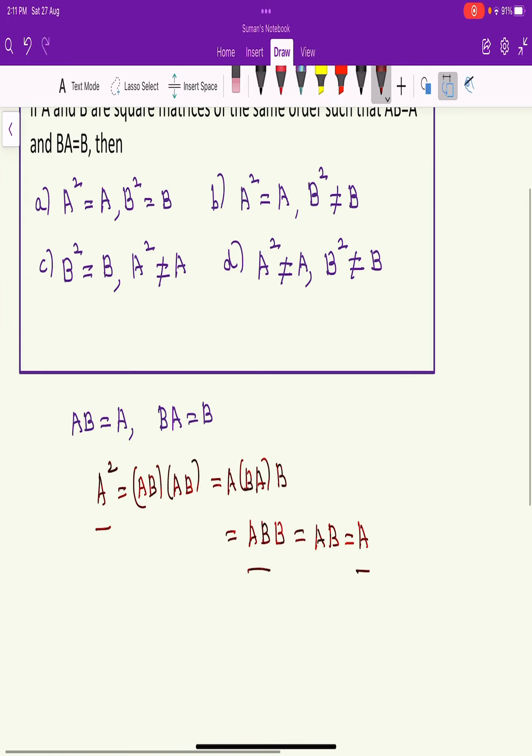Now coming to B squared. B squared is equal to BA into BA. Again, using the same property, multiplication is associative, so you get B times AB into A.